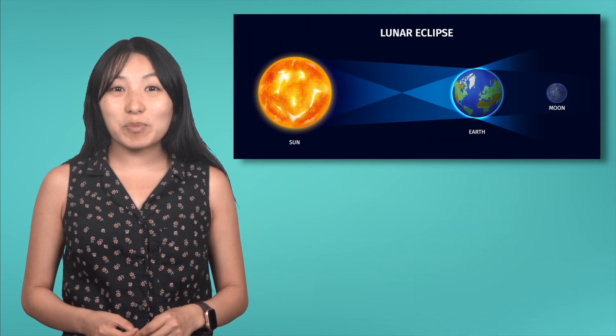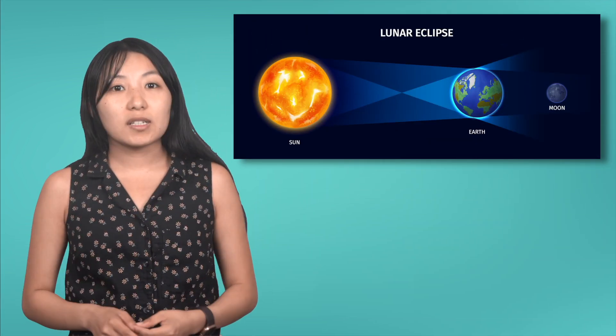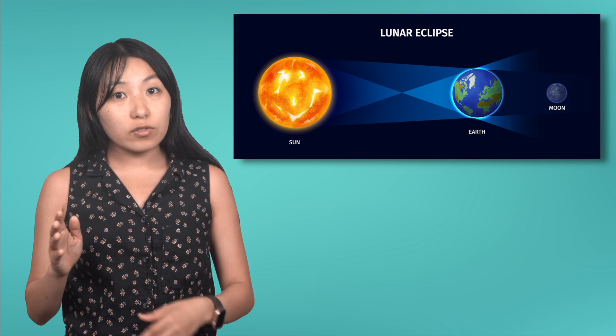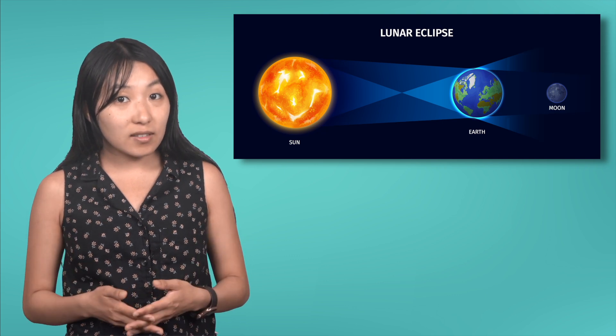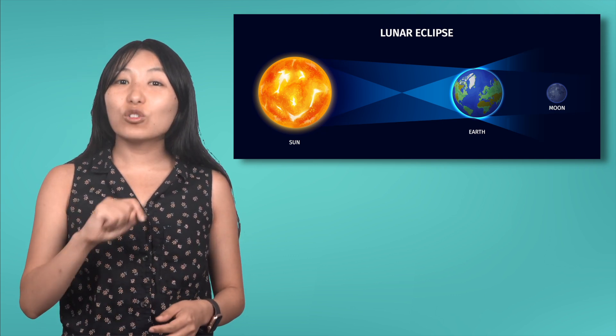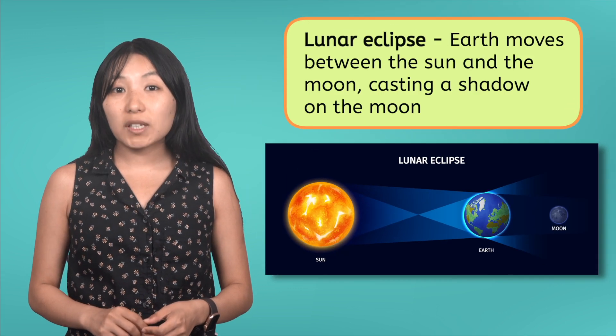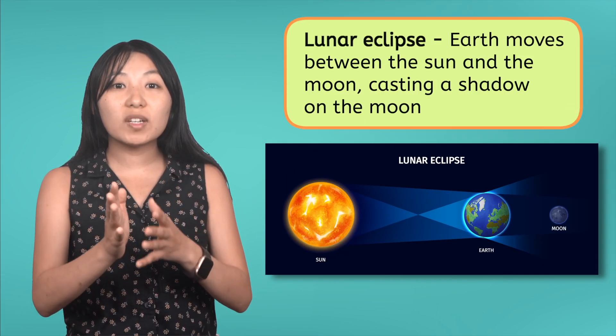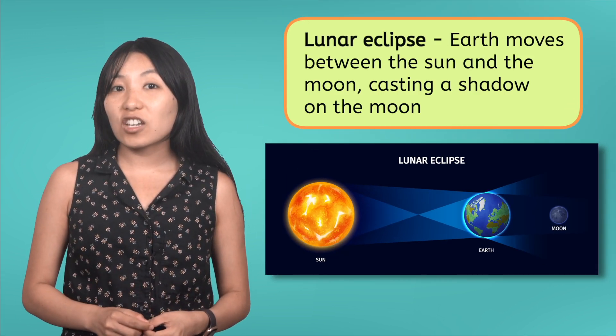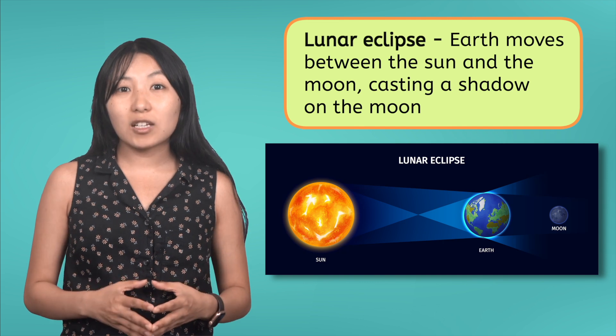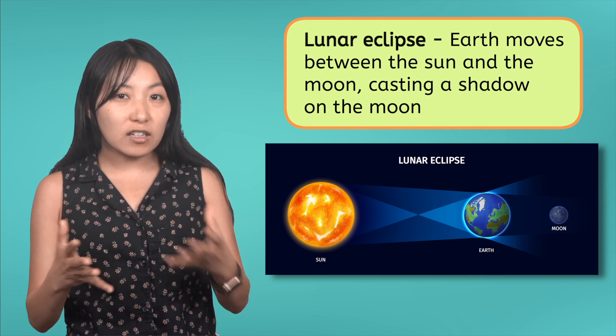Now that we know how solar eclipses work, let's flip the alignment. What happens when Earth, not the Moon, blocks the sunlight? That's right, we get a lunar eclipse. In a lunar eclipse, the Earth moves between the Sun and the Moon, casting a shadow on the Moon and making it appear darker or reddish.